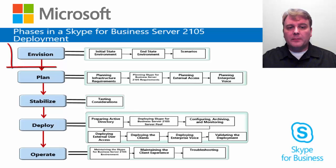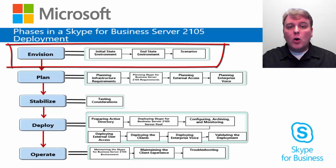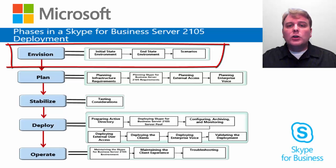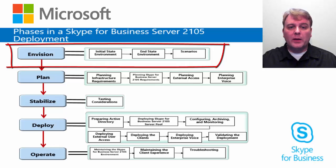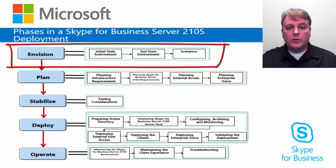We start with envisioning. To determine the scope and plan the implementation of a unified communication solution, such as Skype for Business Server 2015, you should implement the project in several phases. You can create one or more phases between the initial state deployment and the end state deployment based on organizational needs. The decision on phasing and how to phase your unified communications project is usually an iterative process that is based on the business and technical requirements of the organization.